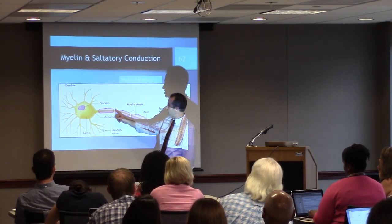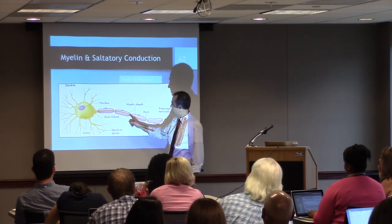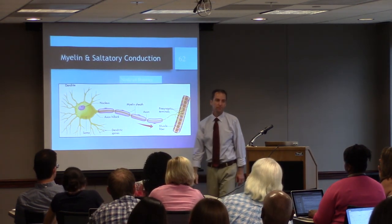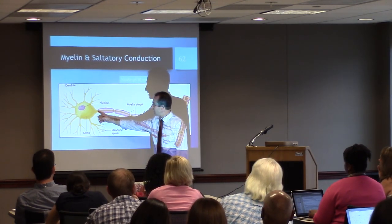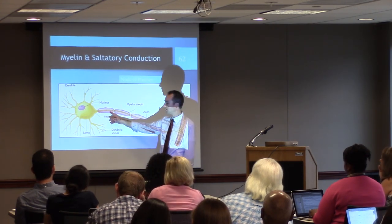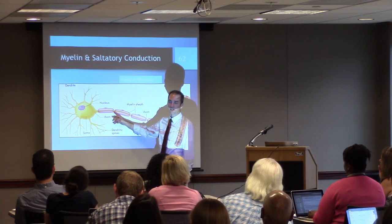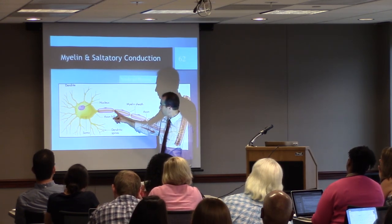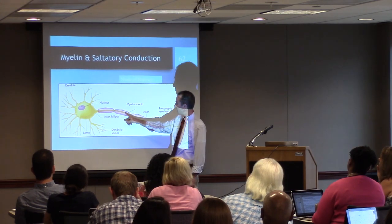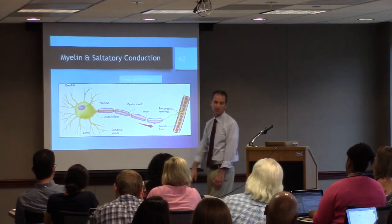What if instead of having every neighbor detect the change and open up, we could skip a few and regenerate the signal every so often — would that be faster? It is. That's what myelin does. The action potential gets regenerated only at the nodes between the myelin. There's enough electrical change that it can passively spread, just like through a wire, and those channels at the next node can still detect it, open up, and let enough positive charge in to regenerate. This saltatory conduction is much faster.